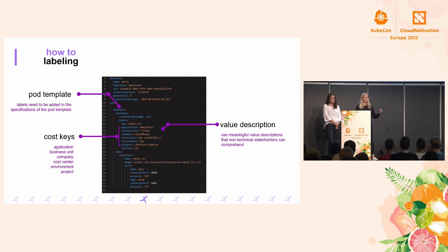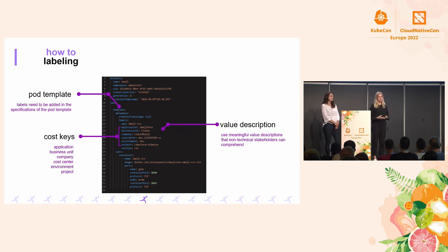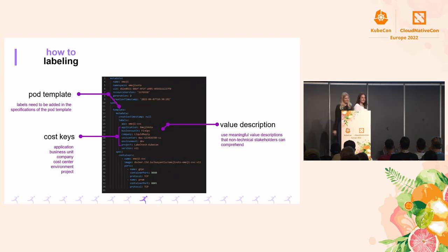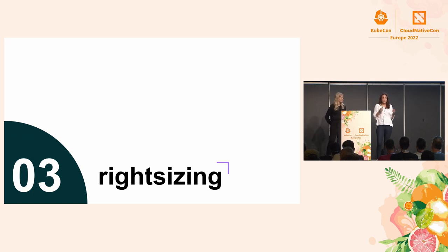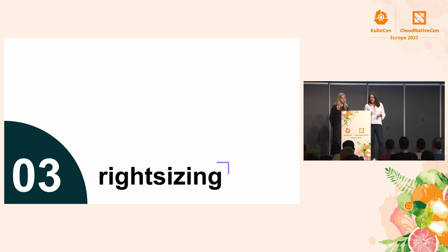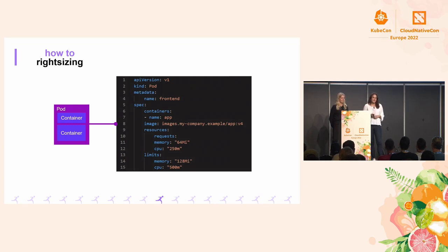So now you've gained cost transparency — basically I can tell you now what your environment is producing in costs. But this knowledge is nothing without knowing how to optimize. Optimizing — that's the purple question from before — and it starts with right-sizing. Right-sizing is all about setting the right amount of CPU, memory, or resources for your cluster, nodes, and workloads. And the essential part: it starts by setting resource requests and limits. Per default, Kubernetes doesn't set any resource limits to your pods, so a pod can consume whatever amount of resources it wants.